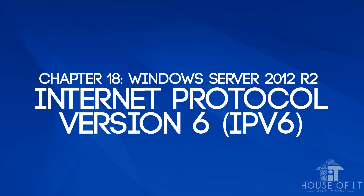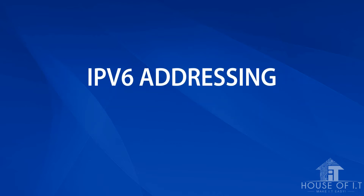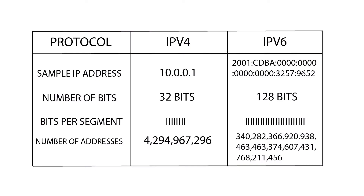The first thing we need to know about IPv6 is addressing. In IPv4 we had a 32-bit address, but here in IPv6 we now have a 128-bit address, allowing 2 to the power of 128, or approximately 3.4 times 10 to the power of 38 — that's 340 followed by 36 zeros, or 340 undecillion addresses.